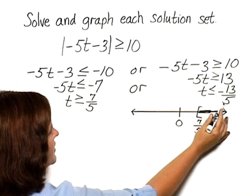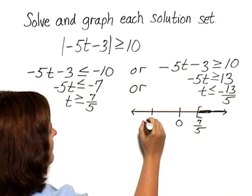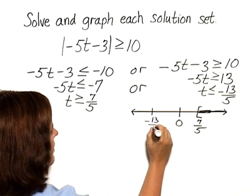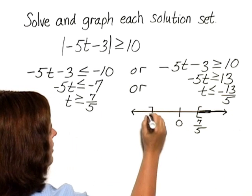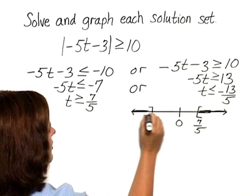And then the set of all numbers that are less than or equal to negative 13 fifths. Again, using a bracket and shade that section in on the number line.